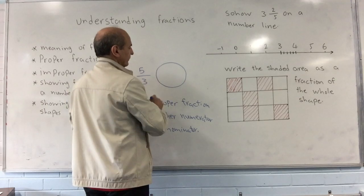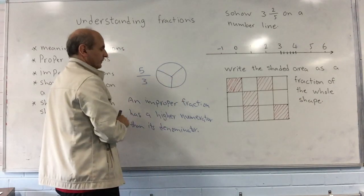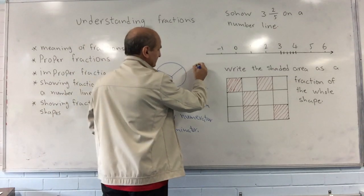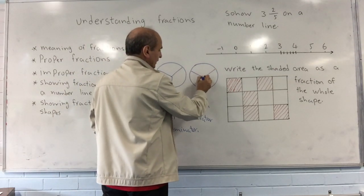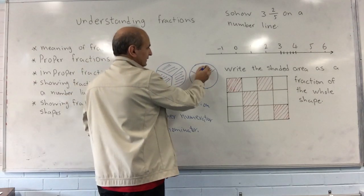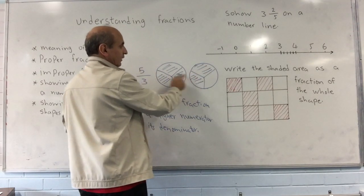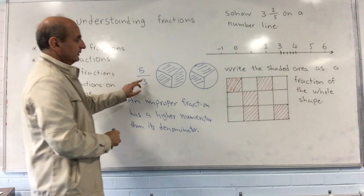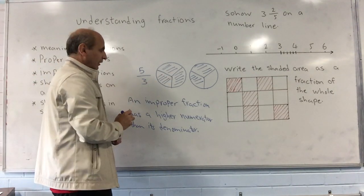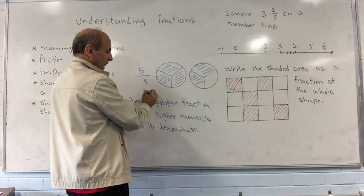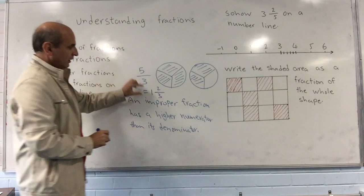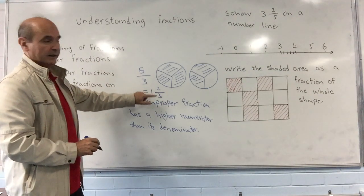Five-thirds is an example of an improper fraction, and this will be larger than the whole. If you have a pizza divided into three parts and you're taking five parts, you have to go to the next pizza, divide it into three parts, and take those as well. So you end up with one whole pizza and two more parts — one and two-thirds. Five-thirds and one and two-thirds are the same thing.